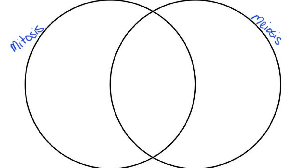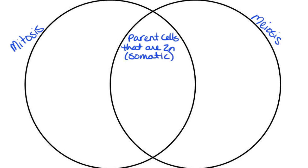If we compare and contrast mitosis with meiosis to look at the similarities and differences, first off both processes are going to have parent cells that are diploid. Not only that, but the parent cells are also going to be somatic cells. Where they happen to be located varies a little bit — when we're talking about meiosis, these would be in the reproductive organs, but when we're talking about mitosis, this is going to be really everywhere.